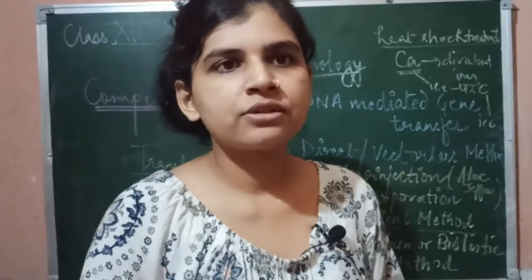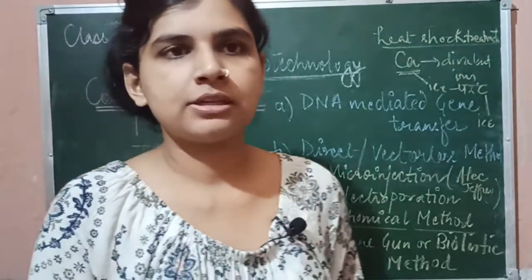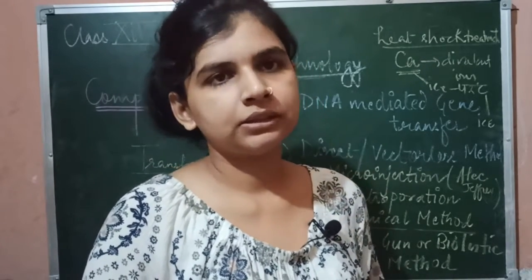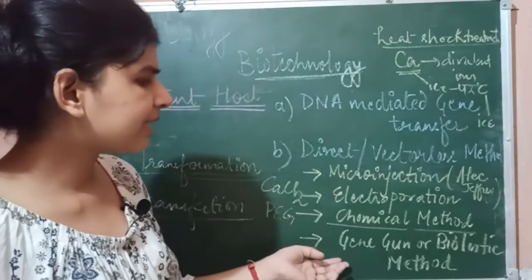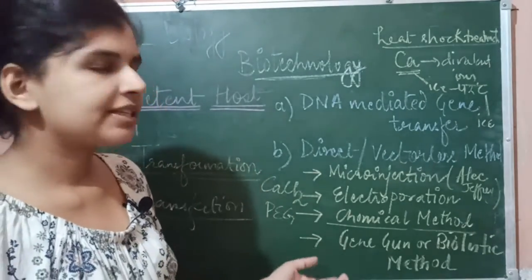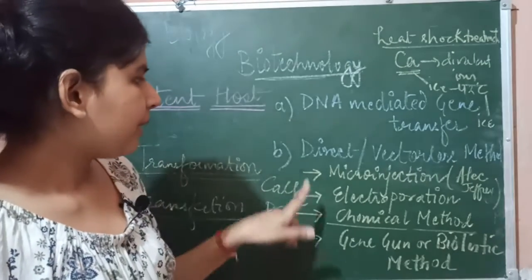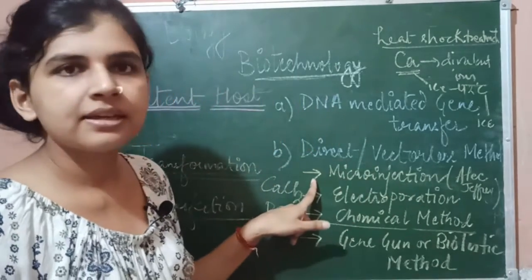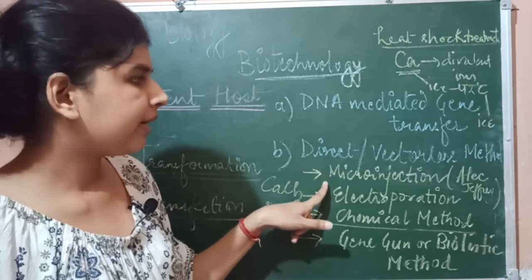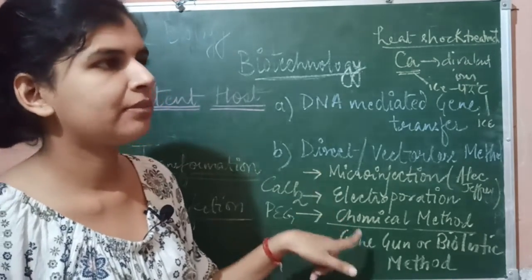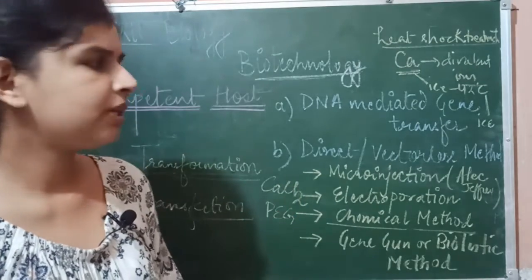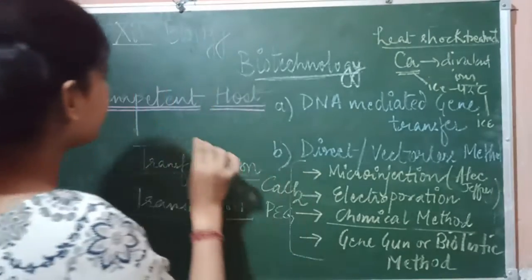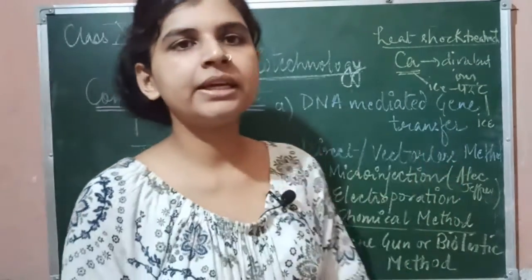The gene gun or biolistic method is also used medically — for example in cases of cancer such as mouth cancer, where it can help heal wounds by delivering cells that carry out repair. It is used for treating genetic disorders and vaccine development. Micro-injection is generally used for egg cells — for instance, it was used to cure a neuromuscular disease in mice. So these are the methods by which we make a host competent so that recombinant DNA can be easily taken up.